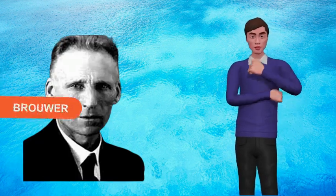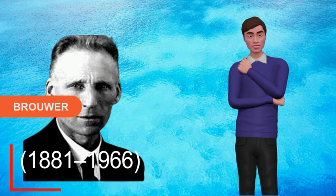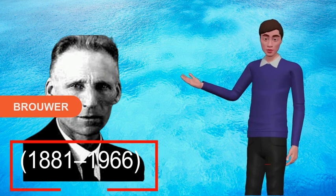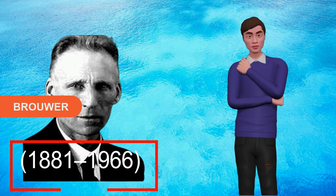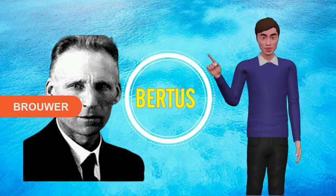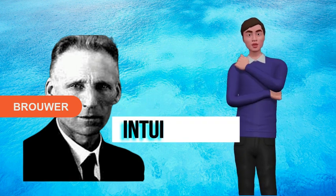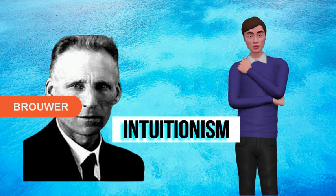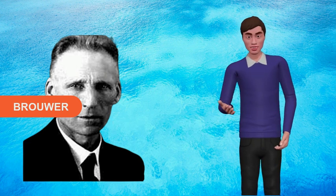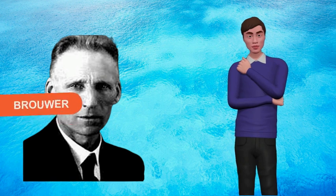4. Brouwer. A Dutch mathematician and philosopher who lived from 1881-1966. He was referred to as L.E.J. Brouwer, but was called Bertus by his friends. In philosophy, he works on intuitionism. Intuitionism views mathematics as a free activity of the mind. Mathematics is considered to be purely the result of the constructive mental activity of human.